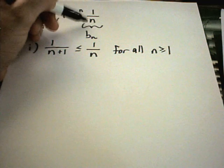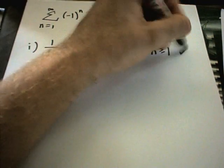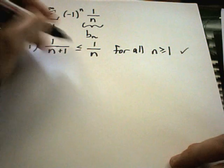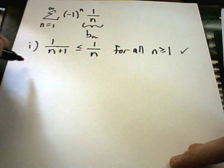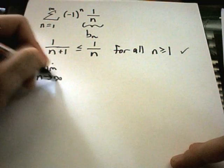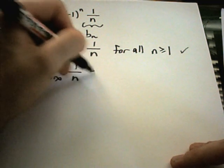You get 1 over 1, 1 over 2, 1 over 3, 1 over 4. So it's pretty clear that this is a decreasing, you have decreasing terms here.